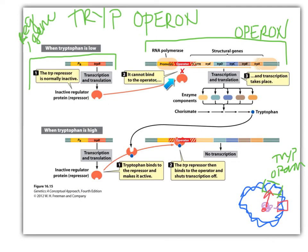That's why we do not include the regulatory genes in an actual operon. The operon is always: promoter, operator, gene, gene, gene, gene, gene. And that is pretty much it — all we have to say about the trp operon is just that. So, thanks so much, and I'll see you next time!